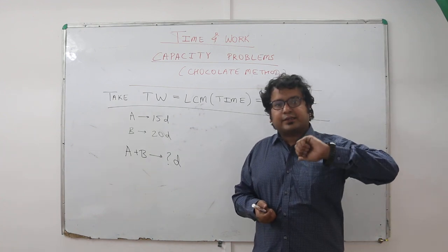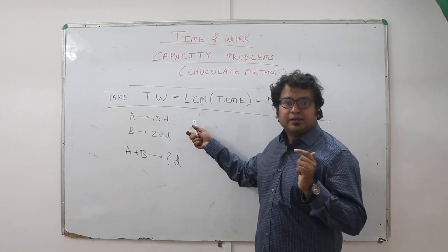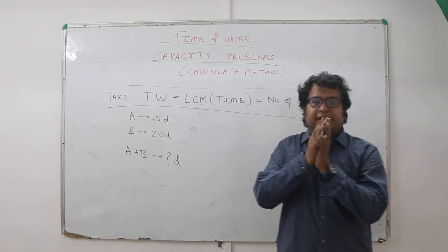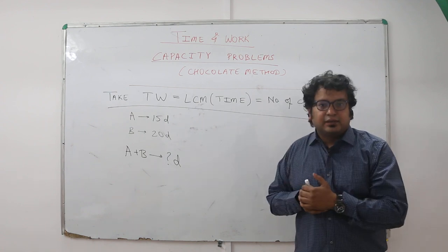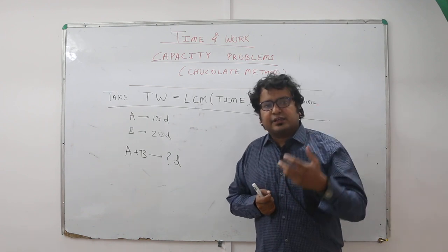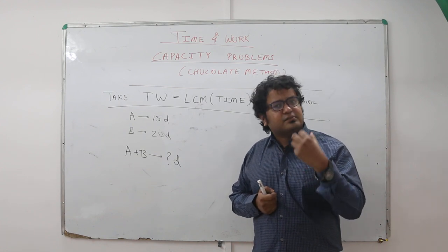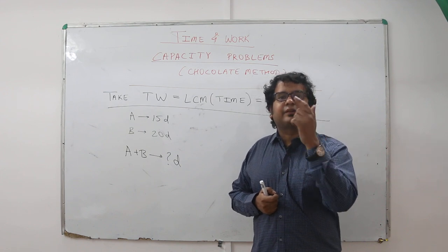Remember we used to take total work as one and then write if A can do one work in 15 days, so in one day how much will A do? A will do 1 by 15. In one day B will do 1 by 20. Now I never questioned at that age why are we taking the total work as one, because it gives us fractions. Rather start with the LCM of days given - you will never get fraction in individual work. That is the logic behind the chocolate method.